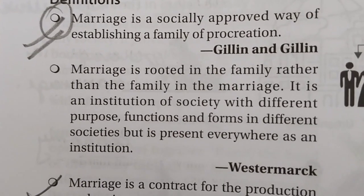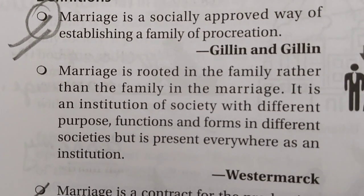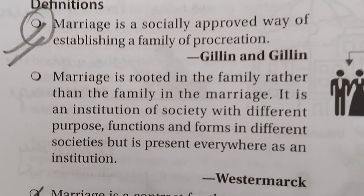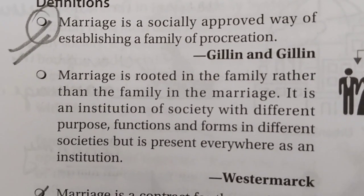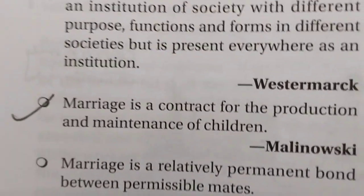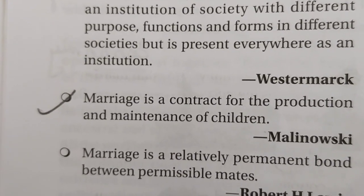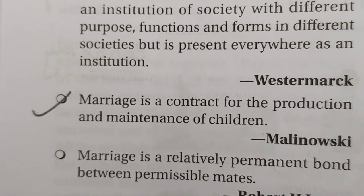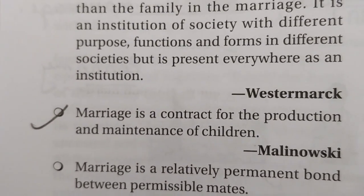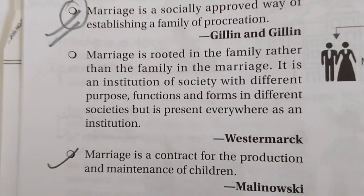Marriage is a socially approved way of establishing a family of procreation. Another definition: marriage is a contract for the production and maintenance of children. This definition has been given by Malinowski. This is also an easy definition — you can learn one definition from these.